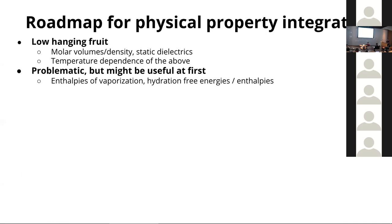Why can't we ignore enthalpies entirely? Because enthalpies provide temperature dependence information on the free energy. In order to get the thermodynamics right, we do need temperature dependence. In order to constrain the parameters, we need to have some sort of temperature dependence. So we might need to include even flawed energetic data which provides the temperature response to free energy required to get the full Gibbs free energy.